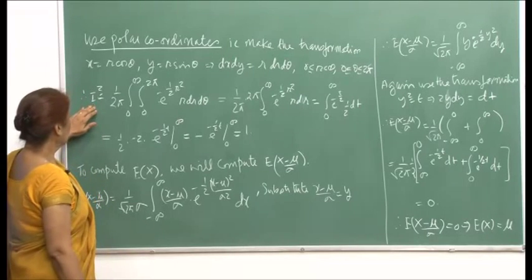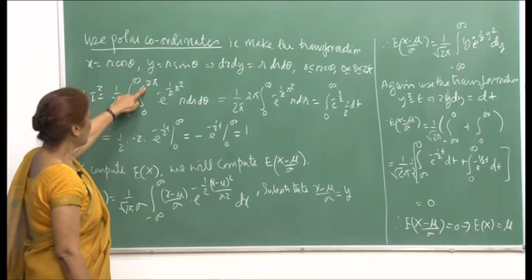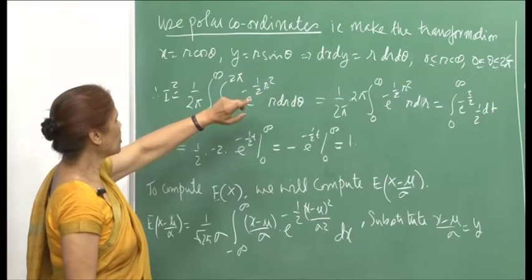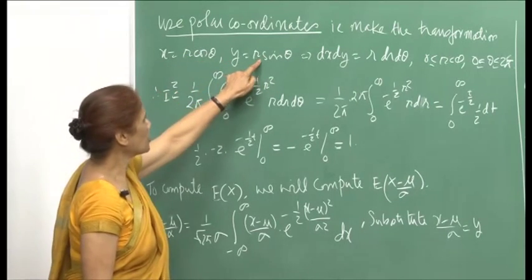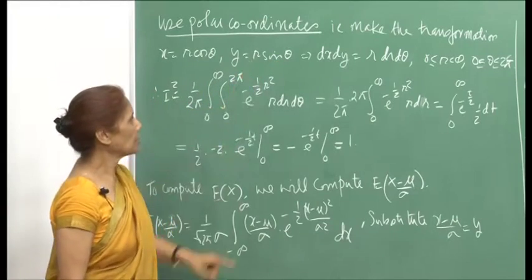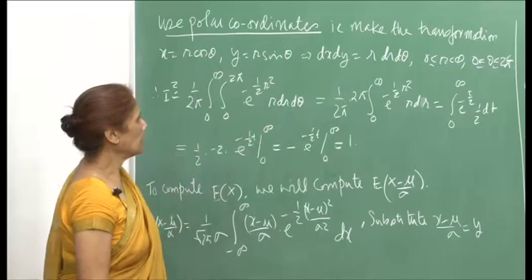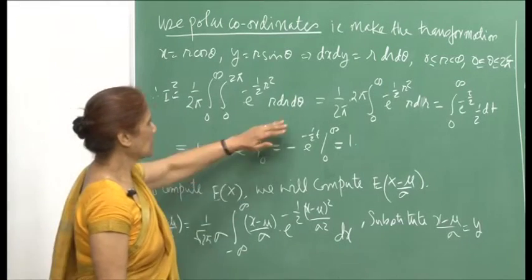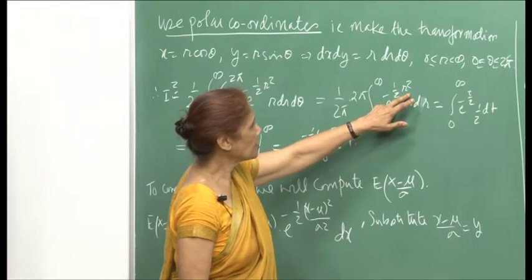Therefore, I squared then becomes 1 upon 2π, integrated from 0 to infinity and 0 to 2π, with e raised to minus half r squared, because x squared plus y squared becomes r squared cos squared θ plus r squared sin squared θ, and since cos squared θ plus sin squared θ is 1, it reduces to r squared. This is r dr dθ, and again this is in a nice form, because now you have r here and e raised to minus half r squared.